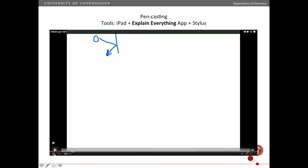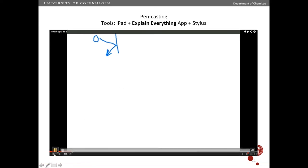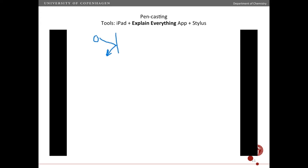If you don't want to use PowerPoint, you can use something more like regular blackboard writing. For that I use an iPad with the Explain Everything app, plus a stylus so you can write on the iPad. The app is cheap — a few dollars — and the stylus is about $20. This also records your voice, and you can draw and explain things, which is especially useful for showing the solution to a problem. If you do this, you should also provide your handwritten notes so students don't waste time copying everything down.